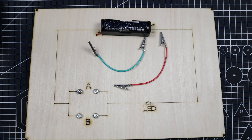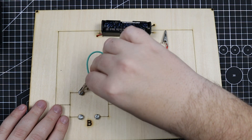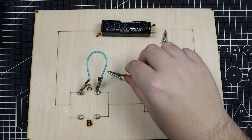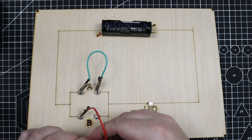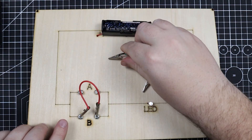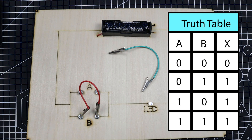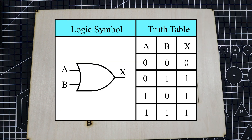Let's look at another logic gate. Here again we have two switches A and B. Now if I close switch A, the LED comes on. If I close switch B, the LED stays on. Now if I open switch A and keep switch B closed, the LED stays on as well. Constructing a truth table, we see that the LED is only off when both A and B are zero. This is known as the logic gate OR, and we can represent it with the following symbol.